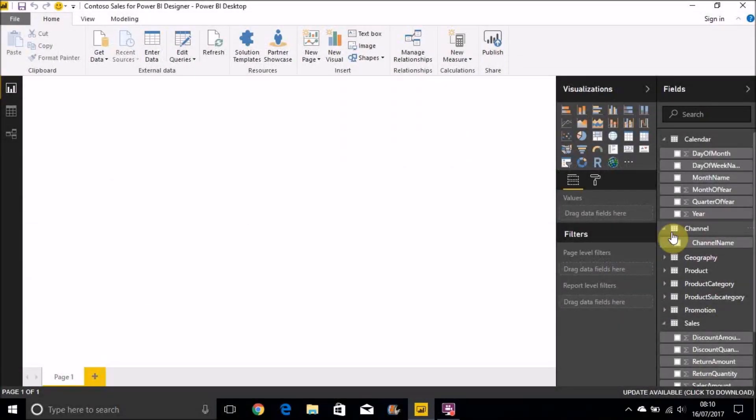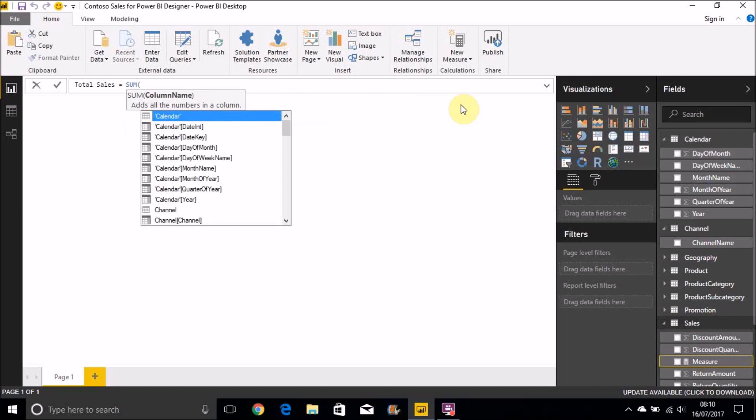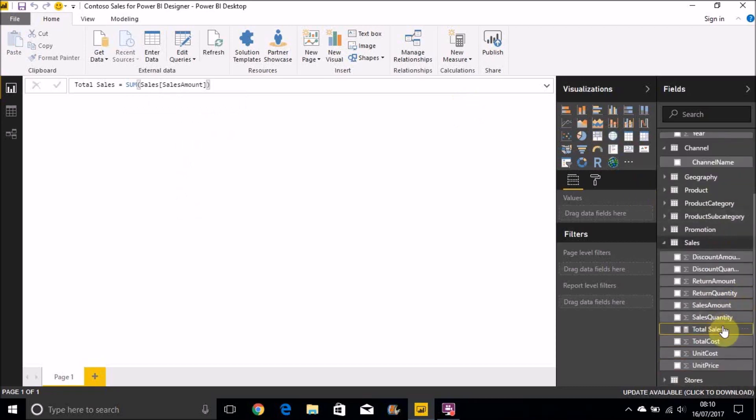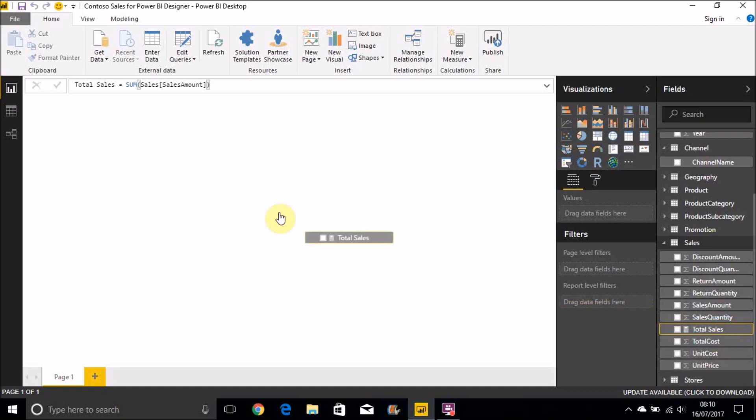So let's switch over to Power BI now and do this for real. We're going to create the first measure, which is Total Sales. So select the Sales table, new measure, Total Sales, and that's equal to the SUM of Sales Amount in the Sales table.